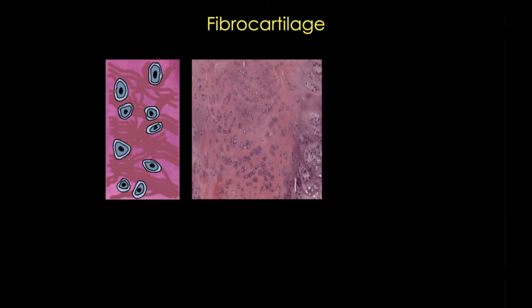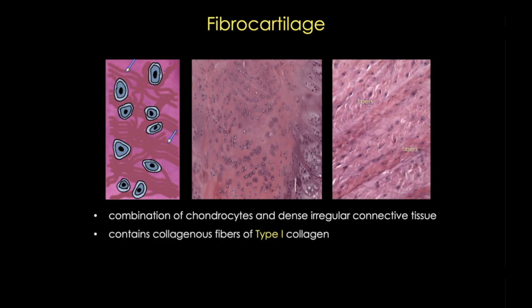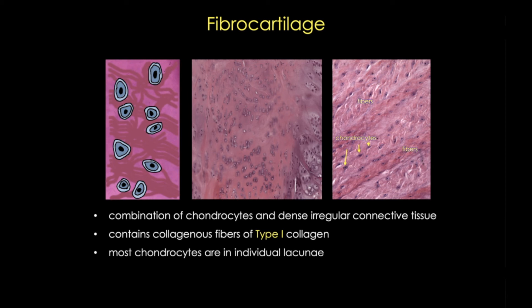Now finally, we come to fibrocartilage. You can almost think of this tissue as a mix of cartilage and dense irregular connective tissue, since it contains not only type 2 collagen, but abundant amounts of type 1 collagen, which form large visible fibers throughout the tissue. This gives fibrocartilage great tensile strength and resistance to pressure, which is why you find it in areas of the body subject to pulling pressures, such as the pubic symphysis and the menisci. Compared to the other two types, it has more fibers than cells, those cells tend to sit in individual lacunae, and they produce much less matrix. This means the tissue is much more eosinophilic or acidophilic than elastic or hyaline cartilage — so if you see chondrocytes but the tissue looks pink and fibrous, you know it must be fibrocartilage.